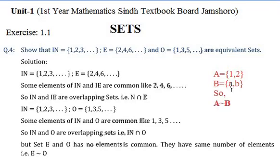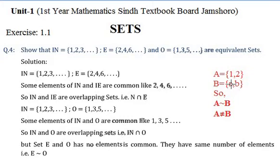We can say that A and B are equivalent sets, but A and B are not equal sets. Equivalent set means just the number of elements is the same, but equal set means the elements must also be the same, along with the number of elements.